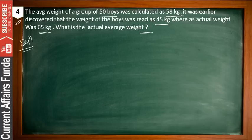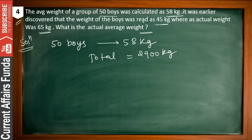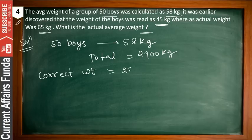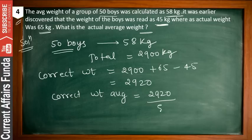There are 50 boys with an average weight of 58 kg. So the total is 50 into 58, which equals 2900 kg. The correct total weight is: 2900 plus the correct value of 65, minus the wrong value of 45, which gives 2920. The correct average is 2920 divided by 50, which equals 58.4 kg.